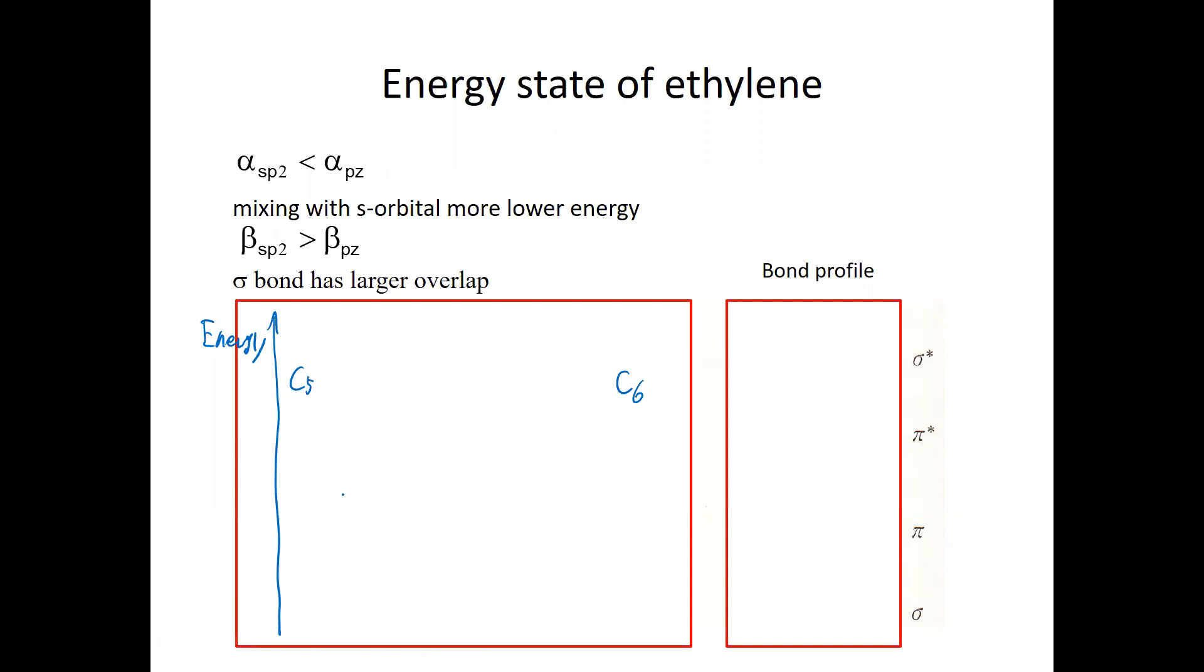So as I mentioned here, the key point, there are two key points. One is atomic orbital energy, thinking about atomic orbital energy. Obviously, s orbital have a lower energy than the p orbitals.